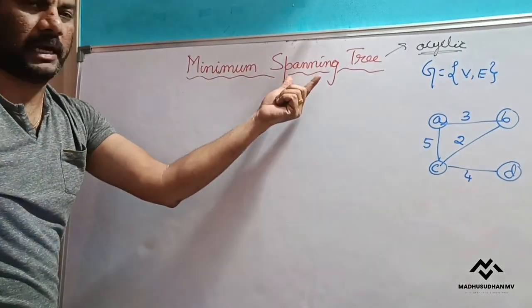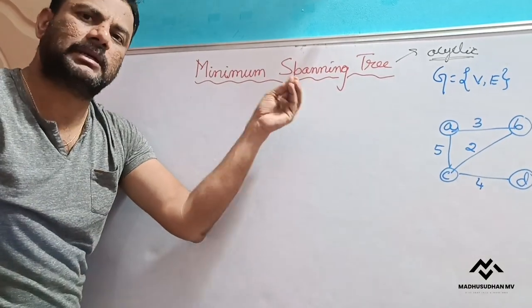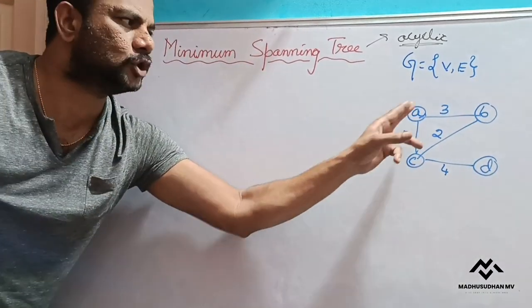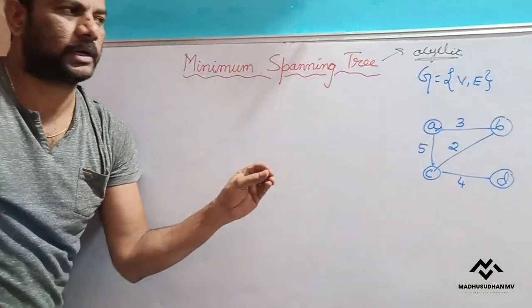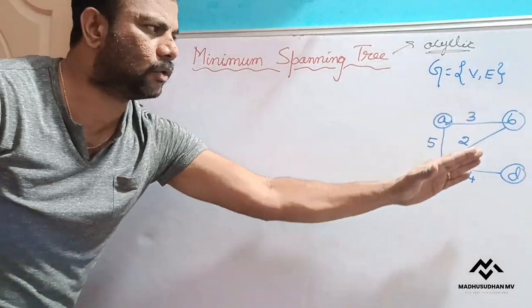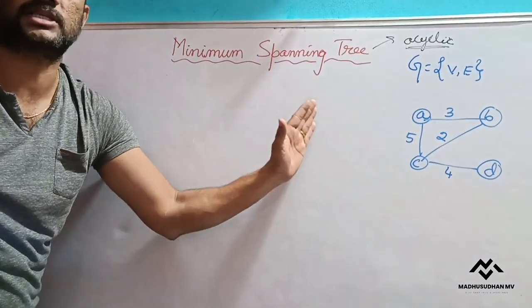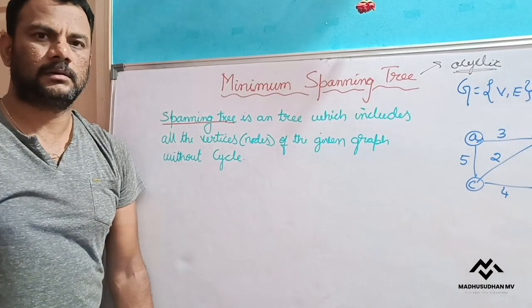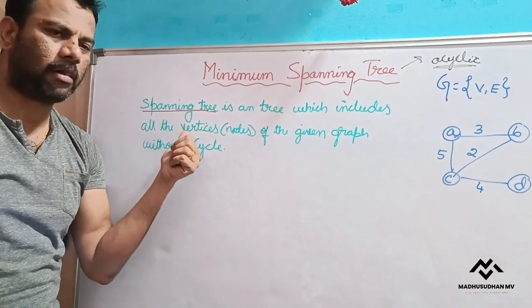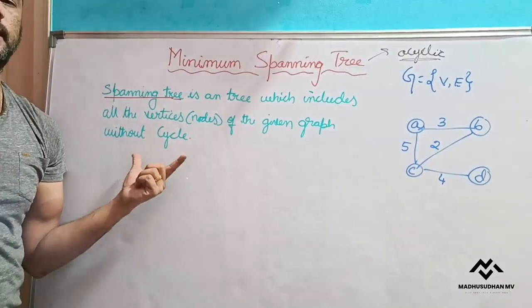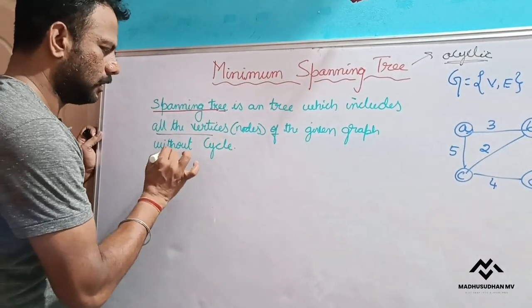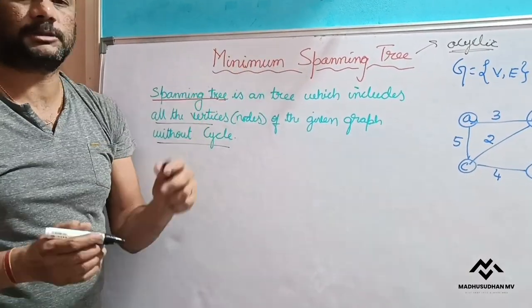So what do you mean by spanning tree? Spanning tree is nothing but a tree which includes all these vertices, that is all the nodes without cycle. Spanning tree is the tree which includes all the nodes of the given graph without cycle. So main thing is you need to include all the vertices and you should not have cycle.